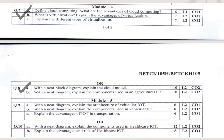Next is Module 5. With a neat diagram, explain the architecture of vehicular IoT; explain the components of vehicular IoT; and list the advantages of IoT in transportation. You will draw the architecture block diagram and explain it, explain the components with a diagram, and list the advantages of IoT in transportation. The split is 8-8-6, totally 20 marks.